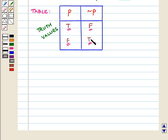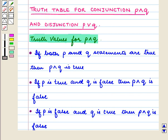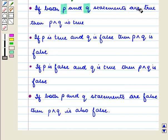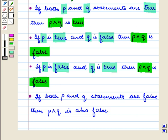Now, let us see the truth table for conjunction P and Q, and disjunction P or Q. If both P and Q are true, then P and Q is true. If P is false and Q is true, then P and Q is false. If both P and Q are false, then P and Q is also false.